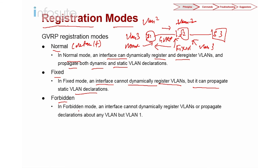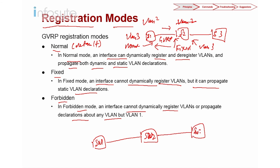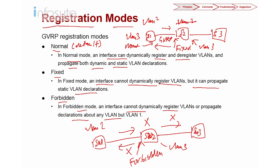In forbidden mode, an interface cannot dynamically register VLANs or propagate any VLAN information except VLAN 1. So if Switch 1 creates VLAN 2 and sends it to a forbidden-mode Switch 2, Switch 2 will not create VLAN 2 and will not propagate it. Even if a static VLAN 3 is created on Switch 2, that information will not be sent to Switch 1. That is forbidden mode.